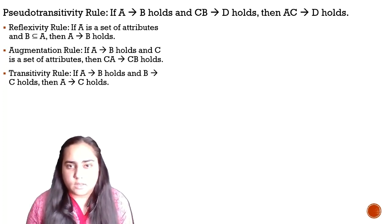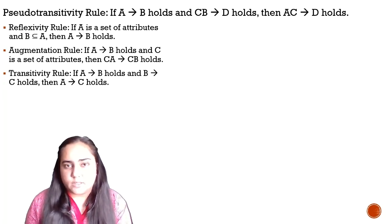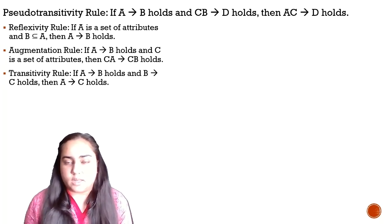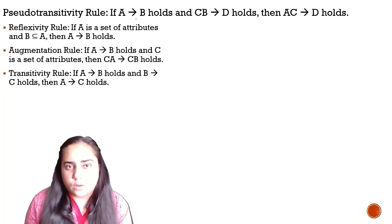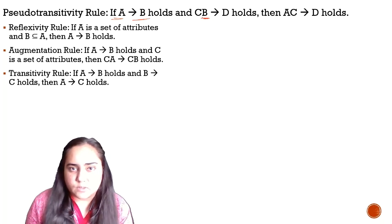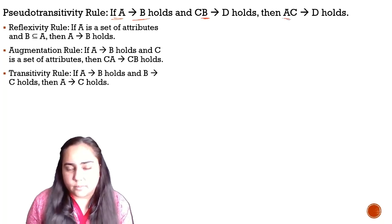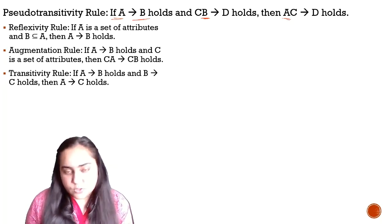This rule is fairly simple to prove. Let's read it first. It says that if A determines B holds and CB determines D holds, then you can say that AC determines D holds. In this case, all we have done is replace B with A in this functional dependency — this B is simply replaced with A.